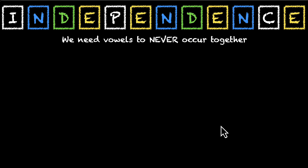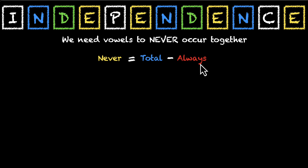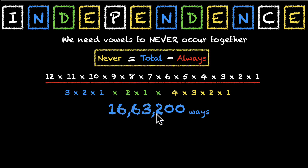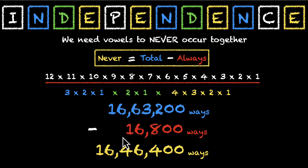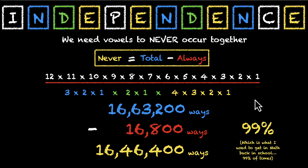Finally, in how many arrangements are all the vowels never together? There's a very efficient way: take the total number of arrangements and subtract the cases where they are always together. The total is roughly 16 lakh, and the always-together case is 16,800. Subtracting gives roughly 16.46 lakh — about 99% of total cases. Good job if you figured all of this out. I'll see you in the next video with the challenge problem.